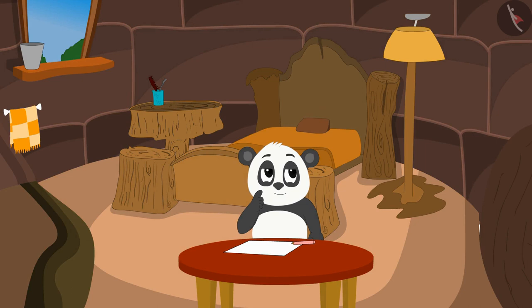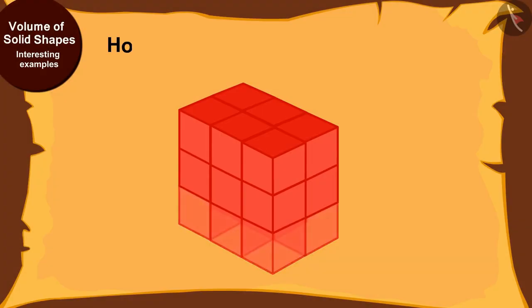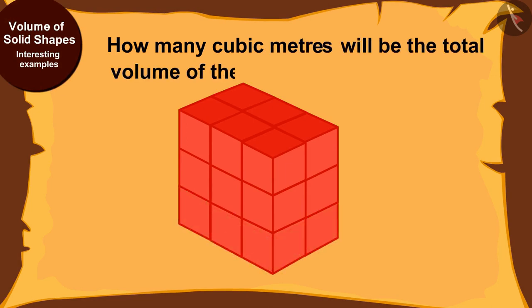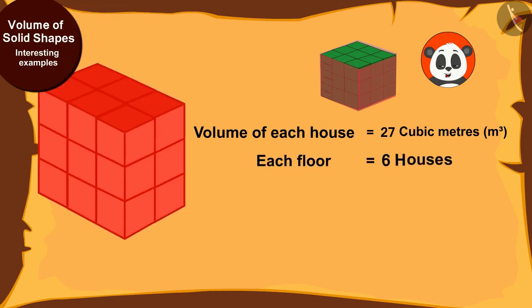If I build 6 houses on each floor of the building, how many cubic meters will be the total volume of the lowest floor? The volume of each house is equal to 27 cubic meters and there are 6 such houses on each floor.